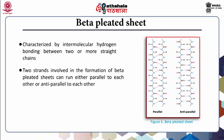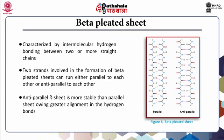If the amino groups of both chains are on the same side, the sheet is said to be parallel. On the other hand, if the amino acid groups of both chains are on opposite sides, the chains run in the opposite direction and the sheet is termed as anti-parallel. The anti-parallel beta sheet is more stable than the parallel owing to greater alignment in the hydrogen bonds.